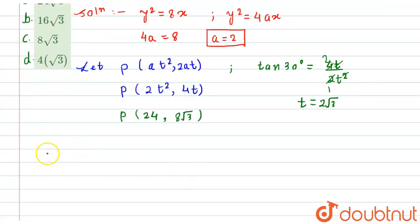Now simply by using distance formula I can find the length of the side of the triangle. The length of side of triangle will be equal to √[(0-24)² + (0-8√3)²]. So this will be equal to √[24² which is 576...